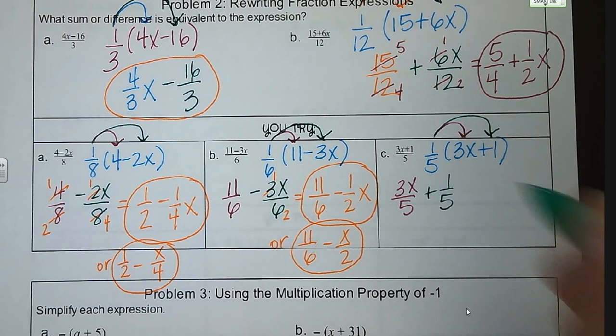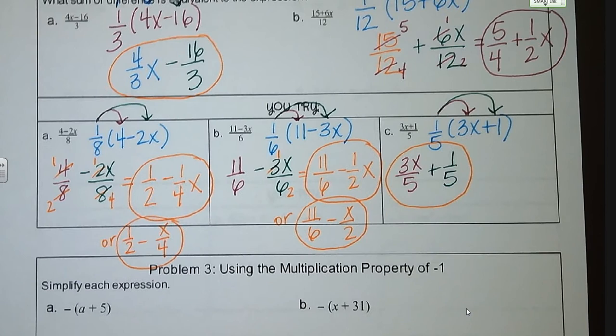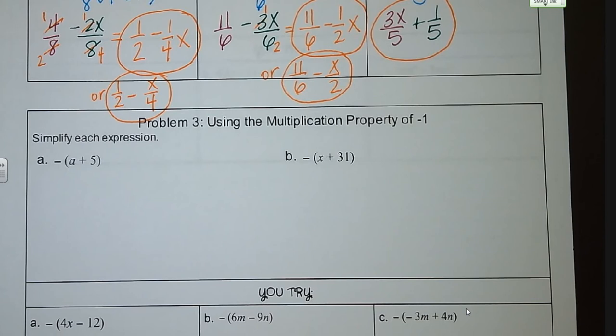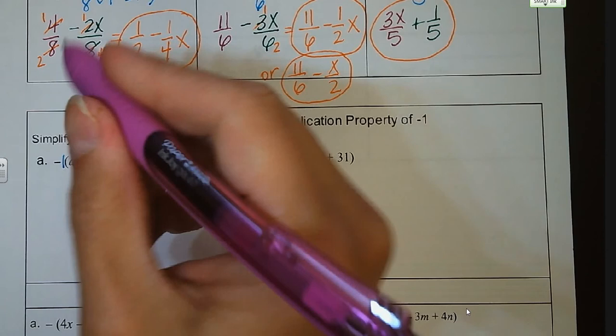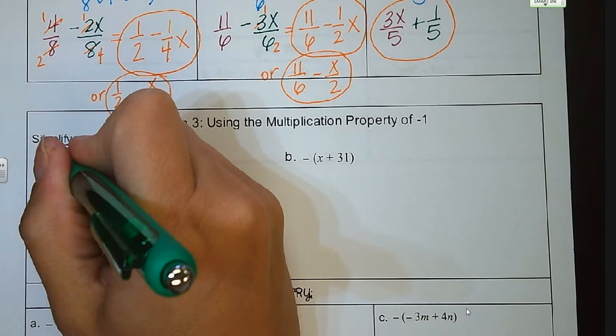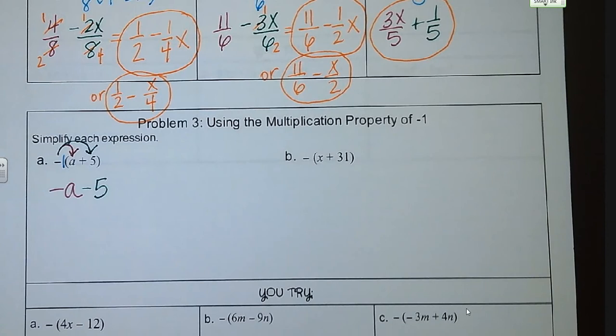Next up, problem number 3, using the multiplication property of negative 1. We can distribute the negative sign across both terms — imagine there's a negative 1 out in front — so we're distributing that negative 1 to all of the terms inside the parentheses. For letter A, we're going to get negative A minus 5. Letter B, we distribute that negative sign and we get negative X minus 31.